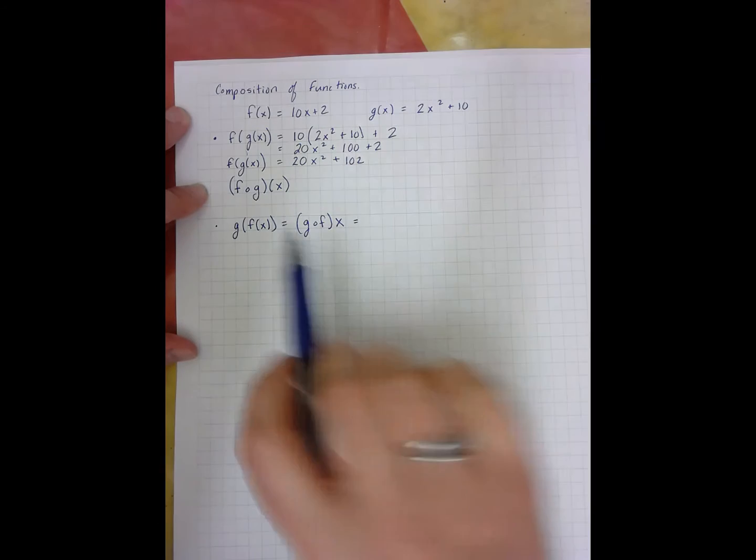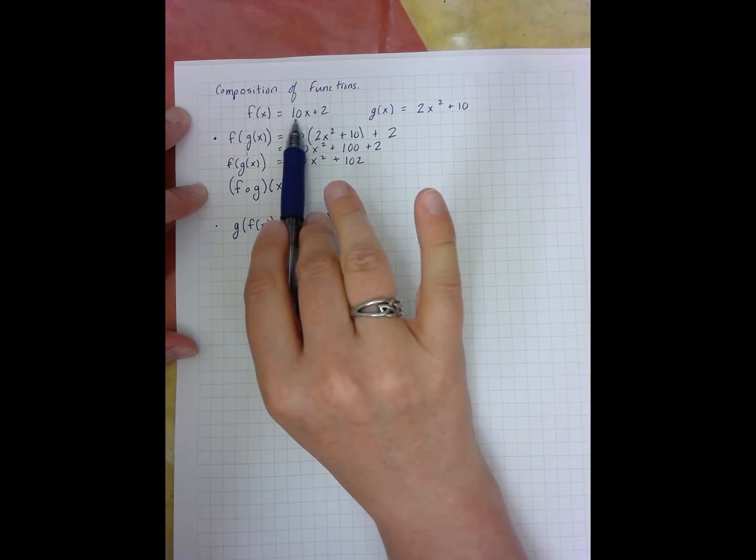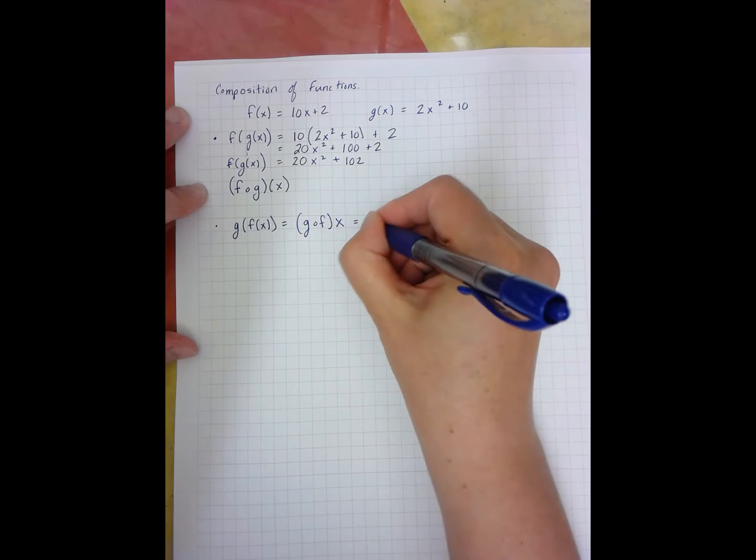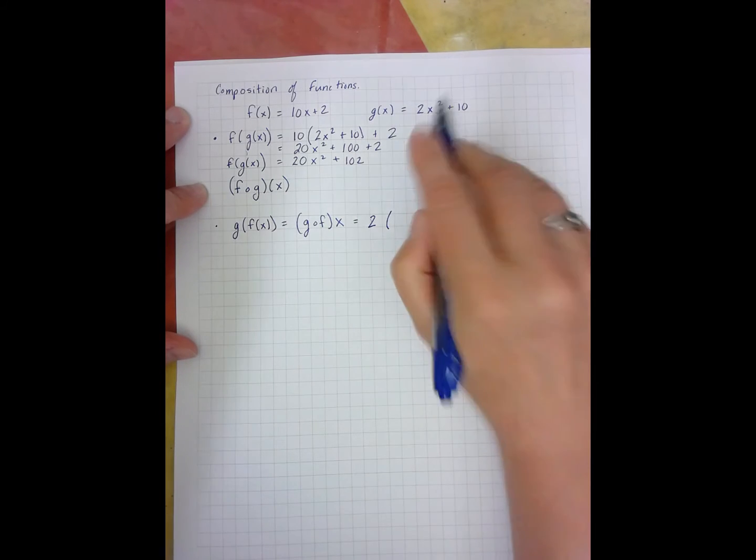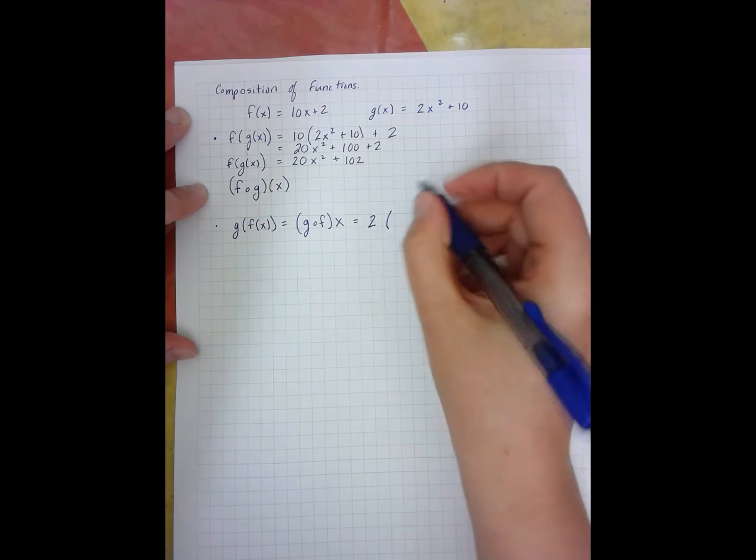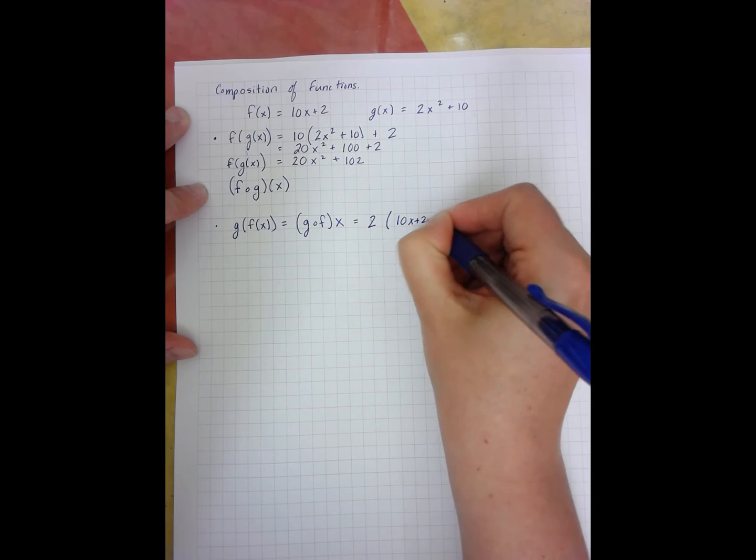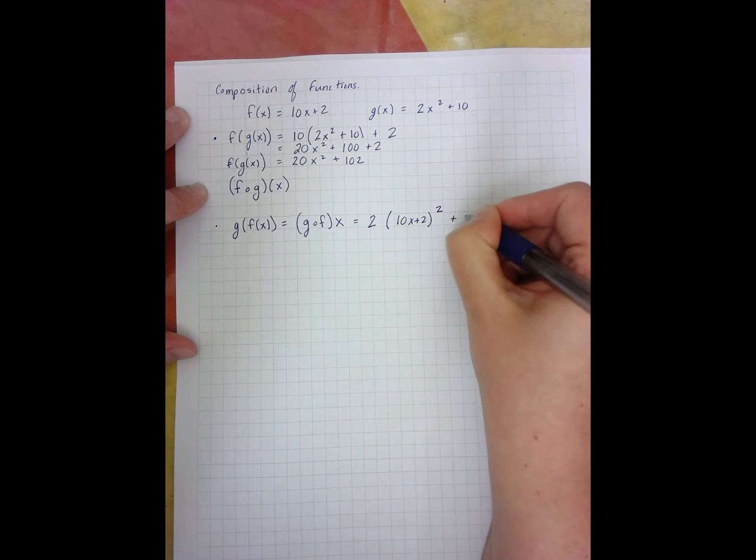And for that one, I'm plugging in the f of x function, so 10x plus 2, into the x. So 2 parentheses, and I'm going to plug in my 10x plus 2, squared plus 10.